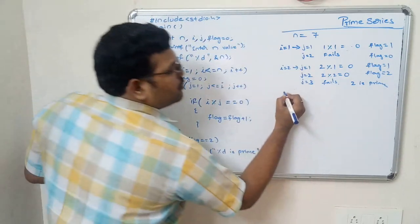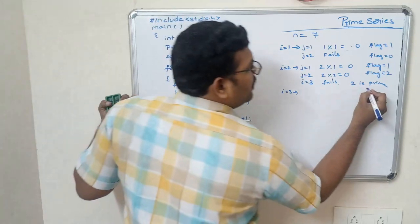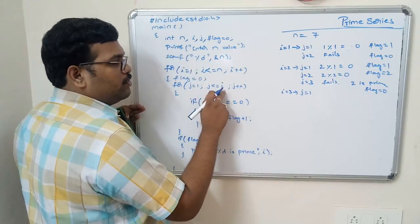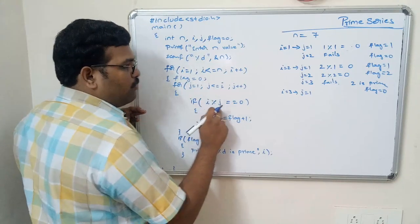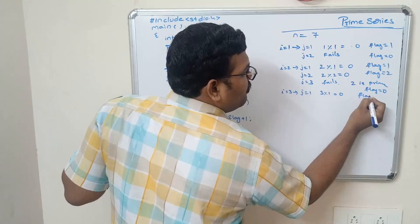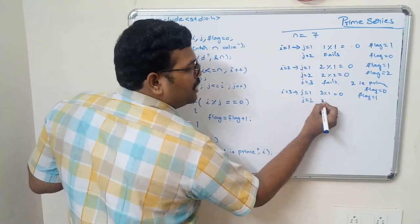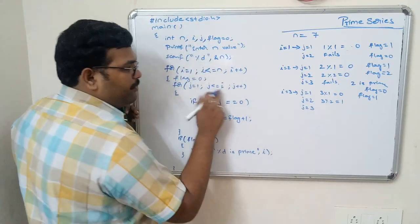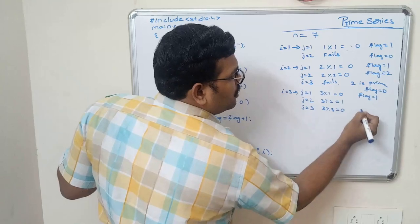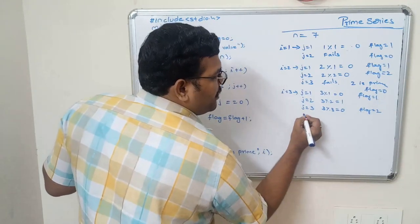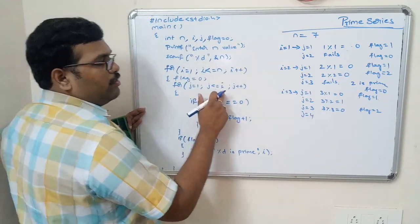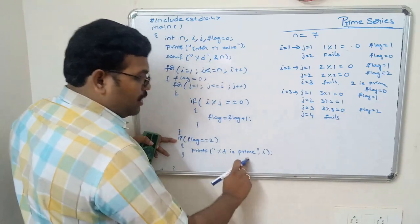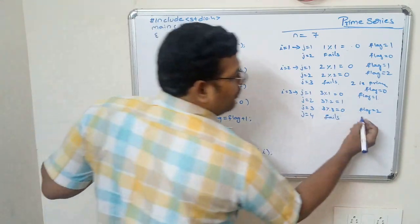For i equals 3 with flag reset to 0: j equals 1, 3 mod 1 equals 0, flag becomes 1. Then j equals 2, 3 mod 2 equals 1, so flag stays at 1. Then j equals 3, 3 mod 3 equals 0, so flag becomes 2. Then j equals 4, and 4 less than or equal to 3 fails. Since flag equals 2, the number 3 is printed as prime.